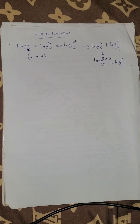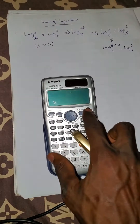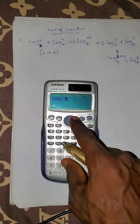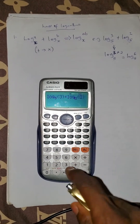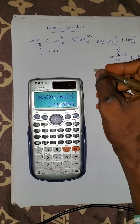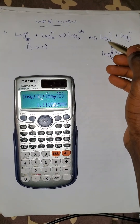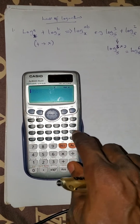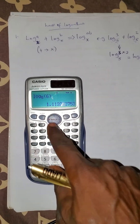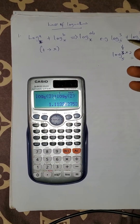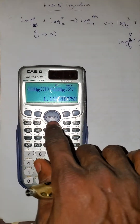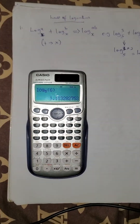If you check this on the calculator, you can see that log 3 base 5 plus log 2 base 5 gives us 1.11, and log 6 base 5 also gives us 1.11 — so it's the same thing.